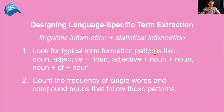On the linguistic information side, the machine is taught typical term formation patterns for a language. So in English, those term formation patterns might include noun, adjective plus noun, adjective plus noun plus noun, noun plus of plus noun, and similar types of patterns that are typical for how terms are formed in the English language.